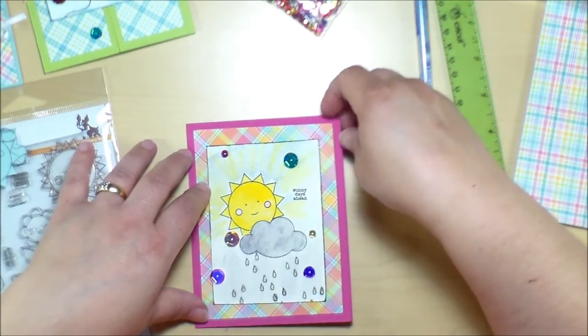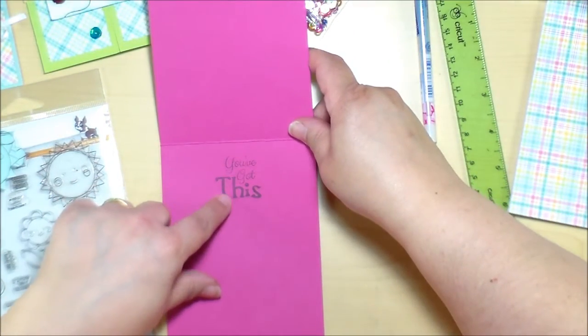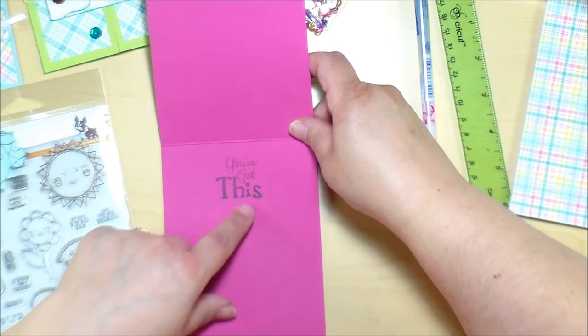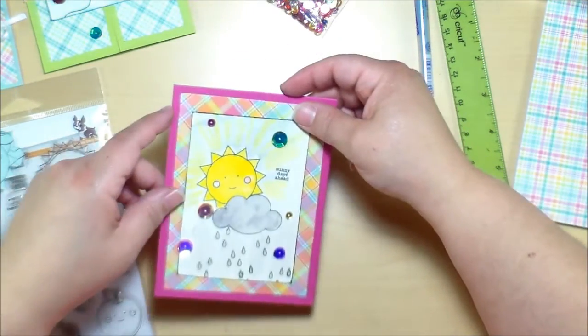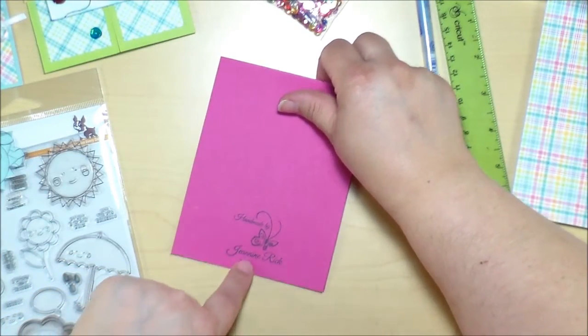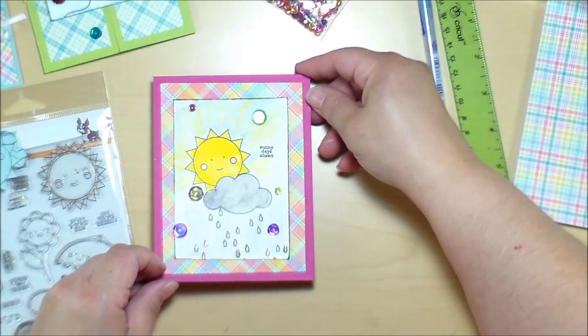So I adhered everything down with double-sided tape. And then on the inside stamped you've got this, and this was from a MFT stamp set. I think it was Chin Up Buttercup was the name of that stamp set. Then of course I've stamped all of them on the back with my handmade by Janine Rick stamp. So that is card number one.